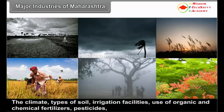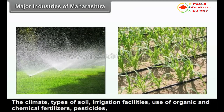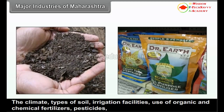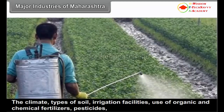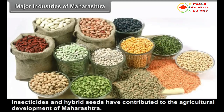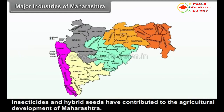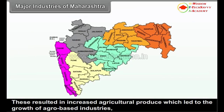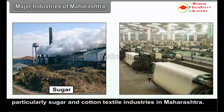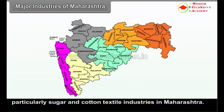5.1 Agro-based industries. The climate, types of soil, irrigation facilities, use of organic and chemical fertilizers, pesticides, insecticides, and hybrid seeds have contributed to the agricultural development of Maharashtra. These resulted in increased agricultural produce, which led to the growth of agro-based industries, particularly sugar and cotton textile industries in Maharashtra.